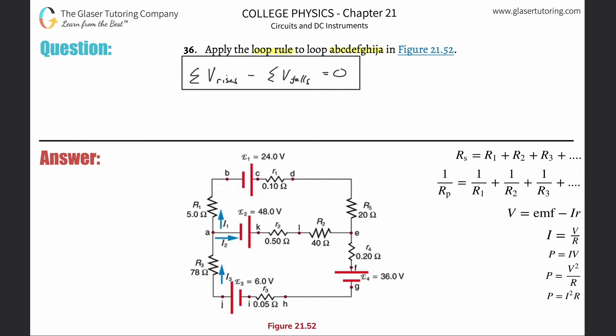All we're going to do is figure out what loop we're talking about. It says A-B-C-D-E-F-G-H-I-J-A, so we're going to start here and go A-B-C-D-E-F-G-H-I-J-A. You thought I was going to say K, didn't you?